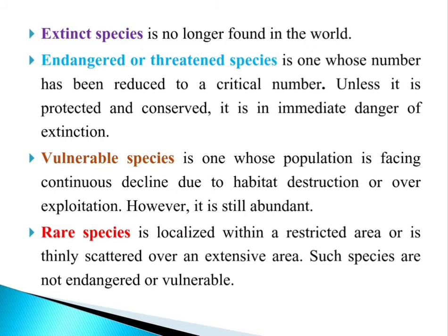Extinct species are no longer found in the world. Endangered or threatened species are those whose numbers have been reduced to a critical level — very few individuals remain in a particular habitat. Unless protected and conserved, they face immediate danger of extinction. Vulnerable species are those whose populations face continuous decline due to habitat destruction or over-exploitation.